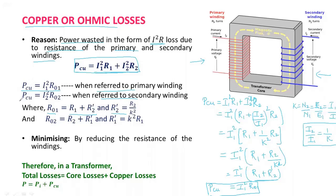Similarly, we can write the total copper loss referred to the secondary side of the transformer as I2²R02, where R02 = R2 + R1' and R1' = K²R1. To minimize copper losses, since these losses occur in the windings of the transformer, they can be reduced by reducing the resistance of the winding, which reduces the I²R losses.